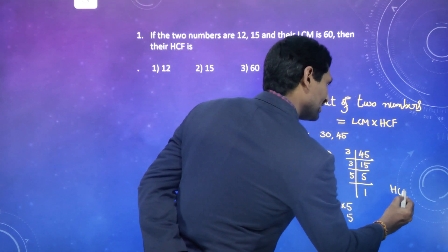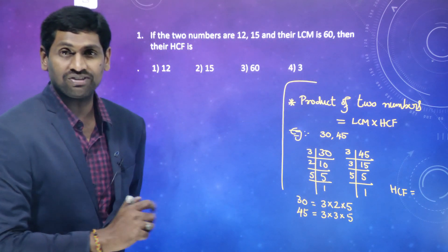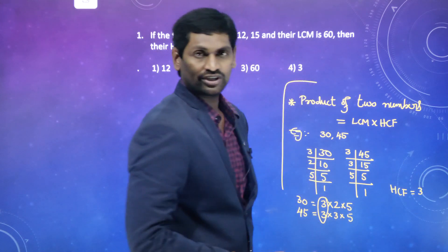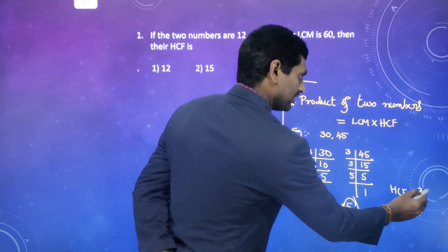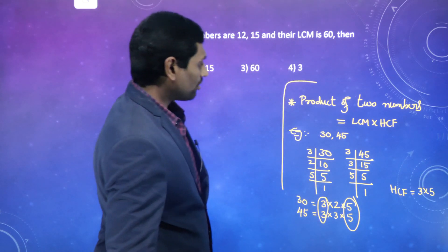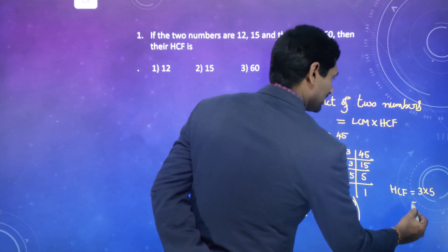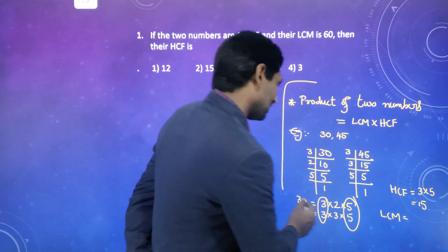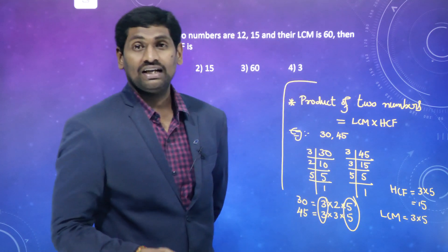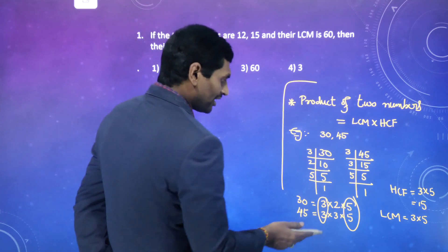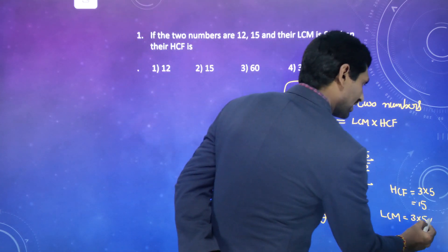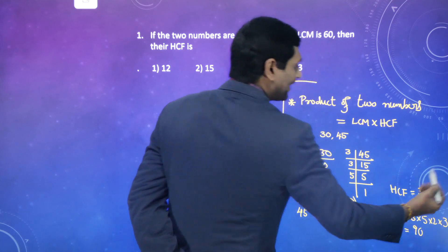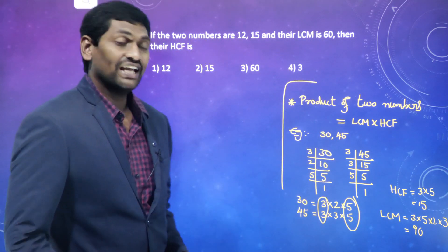Now let me find the HCF — only the common factors between the 2 numbers. 3 is common to both, and 5 is also common. So HCF = 3 × 5 = 15. For LCM, taking the common factors 3 and 5 and including the remaining numbers 2 and 3: LCM = 3 × 5 × 2 × 3 = 90. So LCM is 90 and HCF is 15.